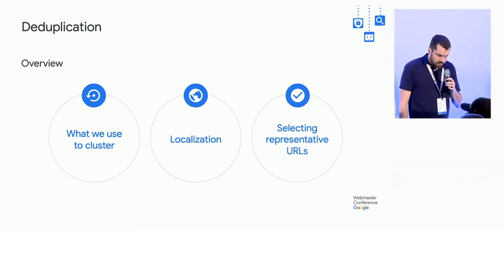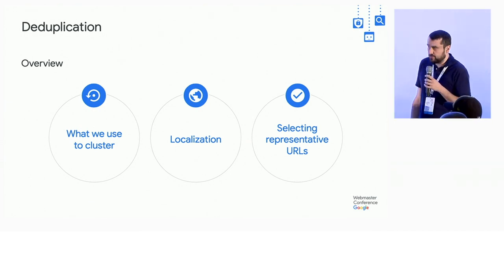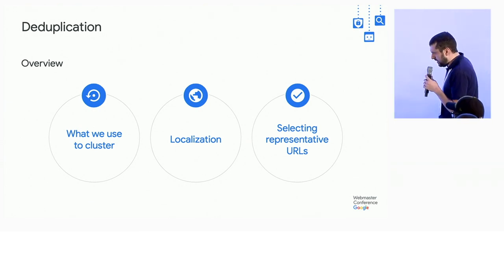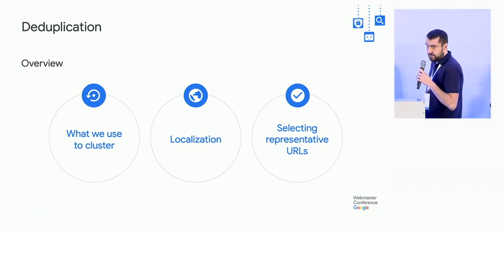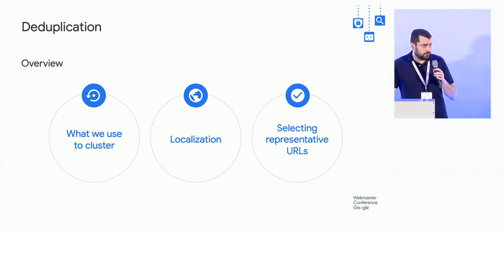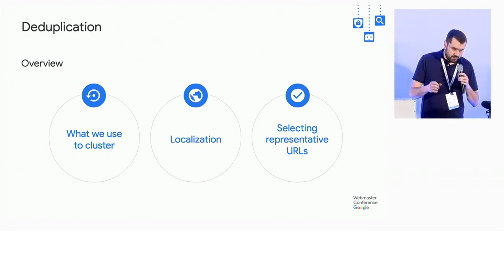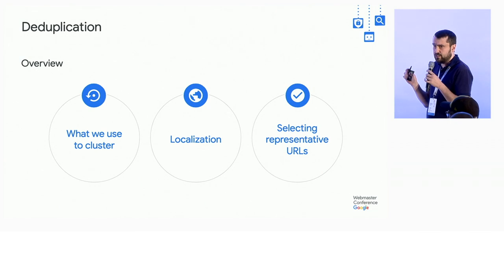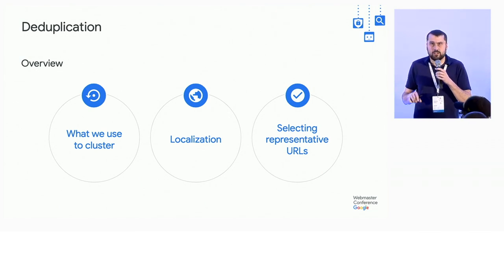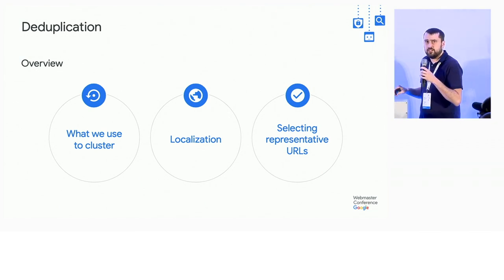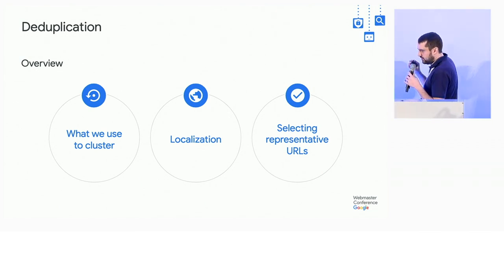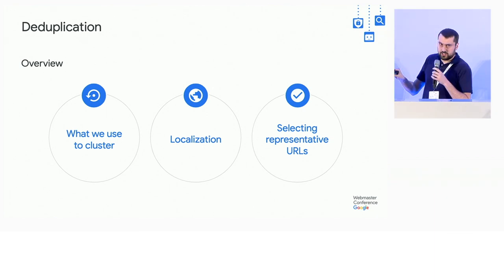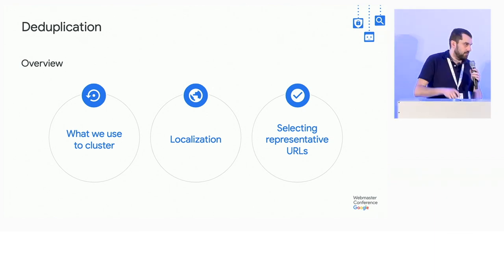I'm going to talk about three things specifically: the signals that we use to cluster pages, a bit about localization because it tends to get caught in the grill here, and then how we select representative URLs.